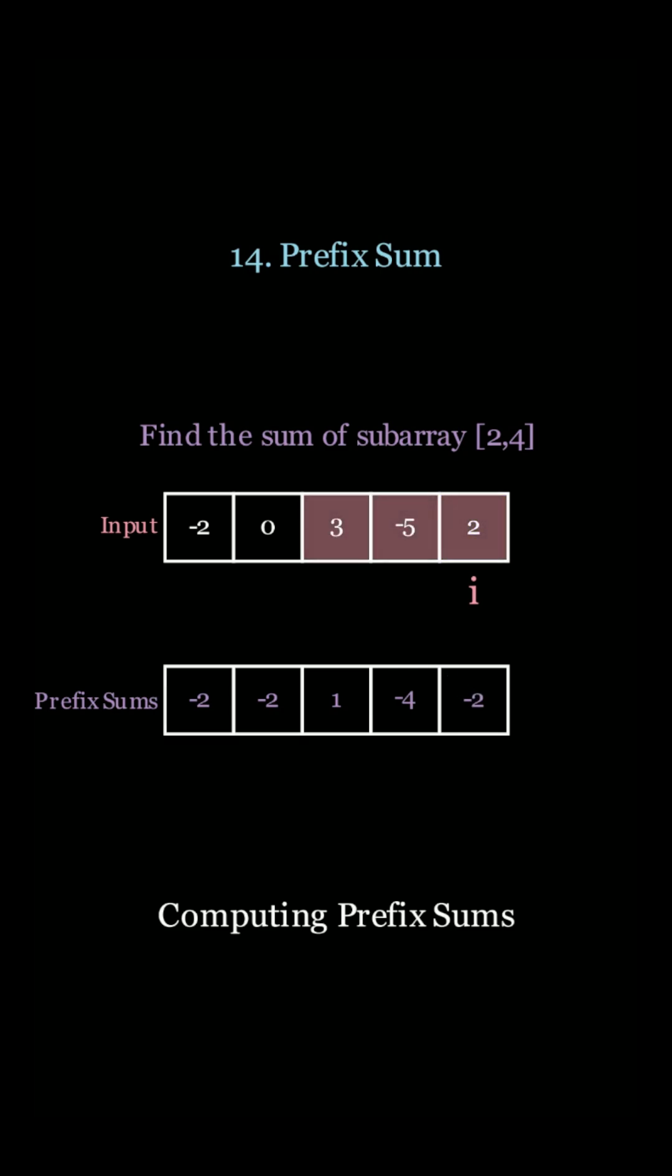So now we're done. Now we wanted to find the sum between indices 2 and 4, which is 3 minus 5 plus 2, which is 0. We could use the formula of the prefix sum array to calculate that response as well in constant time.